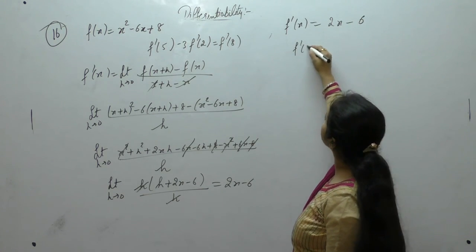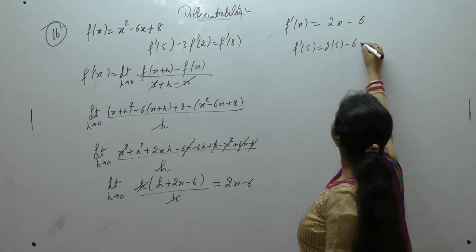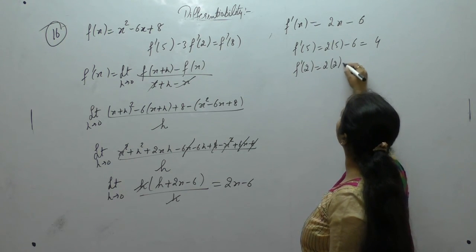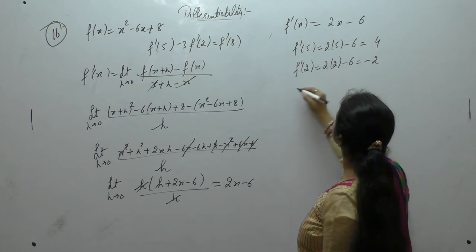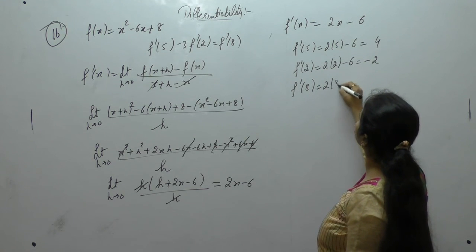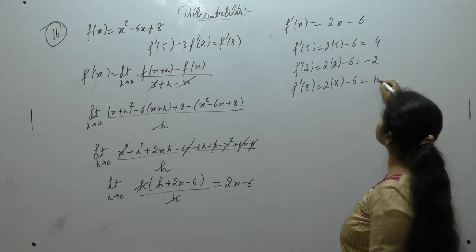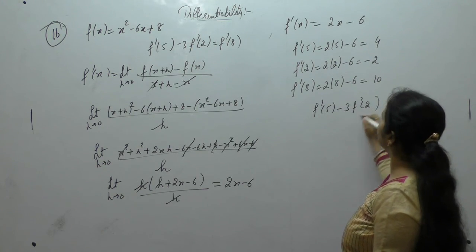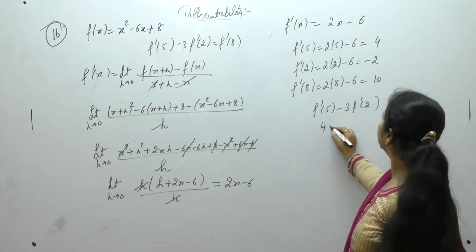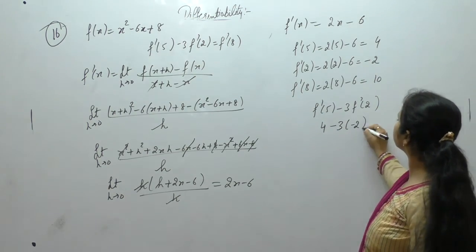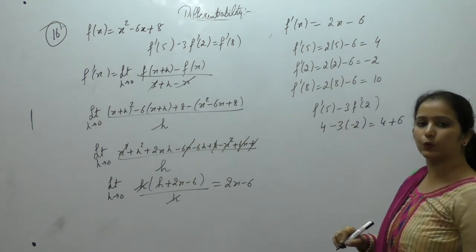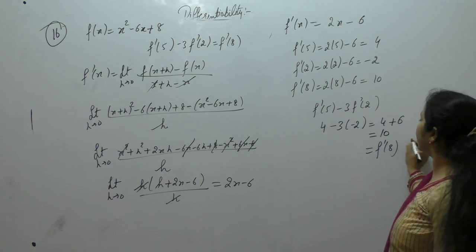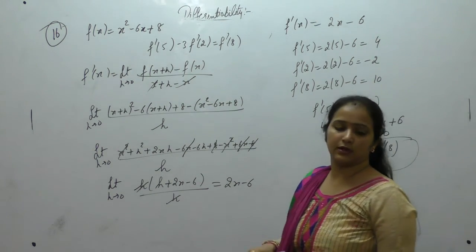Now find: f'(5) = 2×5 − 6 = 10 − 6 = 4; f'(2) = 2×2 − 6 = 4 − 6 = −2; f'(8) = 2×8 − 6 = 16 − 6 = 10. Now f'(5) − 3·f'(2) = 4 − 3×(−2) = 4 + 6 = 10, which equals f'(8). Hence proved. Note it down.